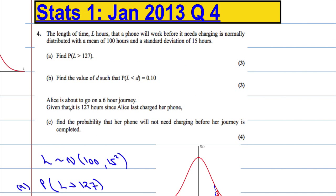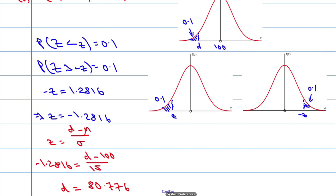Let's look at the final part. Alice is about to go on a 6-hour journey. Given that it is 127 hours since she last charged her phone, find the probability her phone does not need charging before the journey is completed. If it's been 127 hours and she travels for 6 more hours, I need the probability it lasts more than 133 hours.